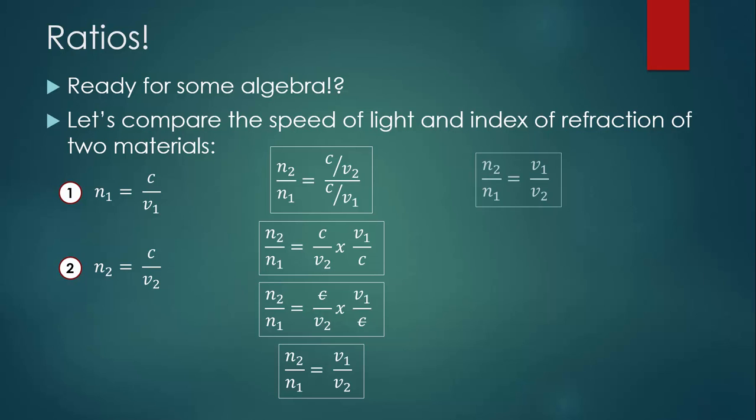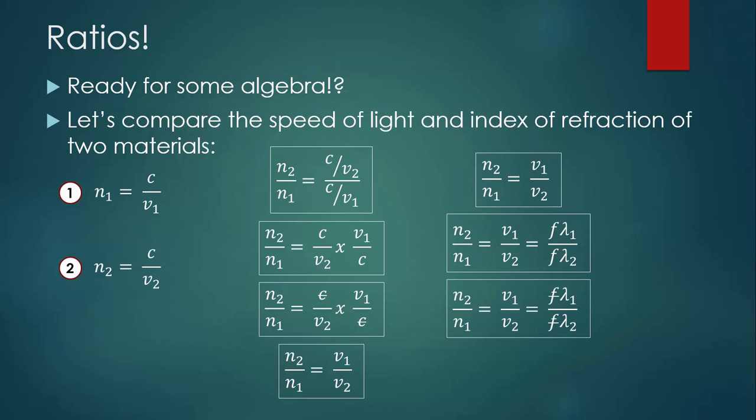Let's go a little farther. The speed of a wave is the frequency times the wavelength. Since the frequency of the light doesn't change as it goes from one material into another, we don't have to write F1 and F2, it's just F. And since we have an F on the top and an F on the bottom, those can cancel out.